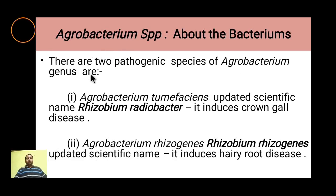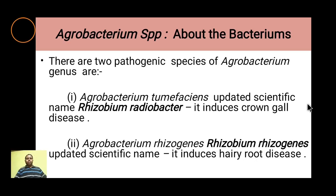There are two pathogenic species of the Agrobacterium genus. The first is Agrobacterium tumefaciens, now updated scientifically and called Rhizobium radiobacter, which induces crown gall disease — the formation of tumors. The second is Agrobacterium rhizogenes, now called Rhizobium rhizogenes, which induces hairy root disease in the plant.